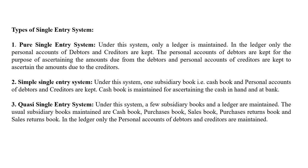Third, the quasi single entry system. Under this system, a few subsidiary books and a ledger are maintained. The usual subsidiary books maintained are cash book, purchase book, sales book, purchase return book, and sales return book. In the ledger, only personal accounts of debtors and creditors are maintained.